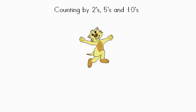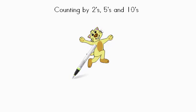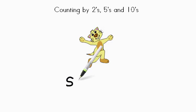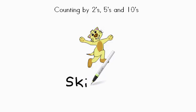Hi there. Today we're going to practice counting by twos, fives, and tens. So what does it mean to count by twos, fives, and tens? That really means that you're skip counting. And if you look at our cat here, he's skipping. So I want you to think about that when you're practicing — that you're actually skipping along the numbers.